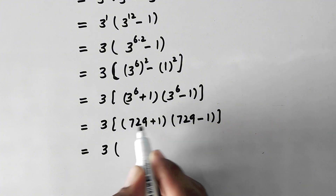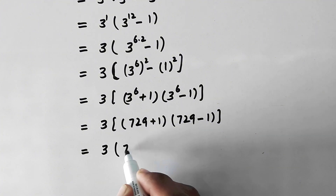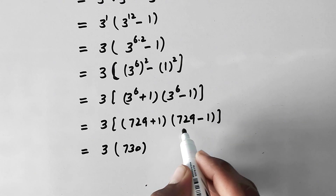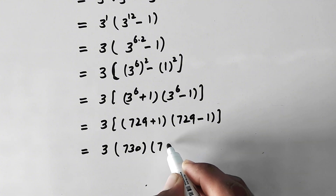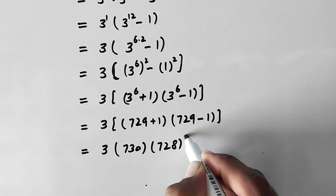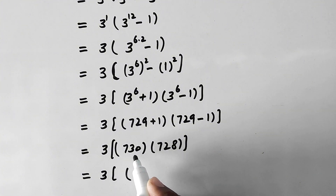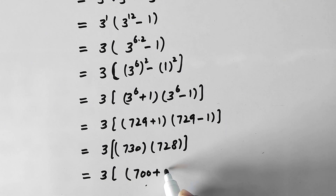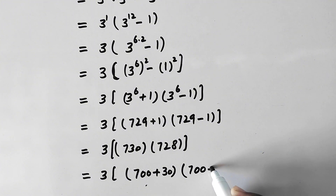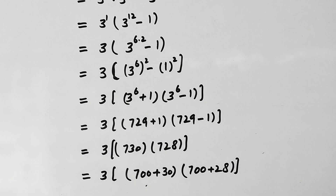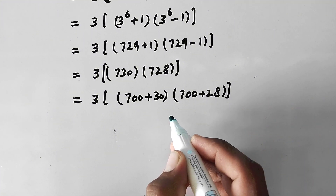So 729 minus 1 equals 728, and 729 plus 1 equals 730. We now have 3 times 730 times 728. To compute this, we expand 730 as 700 plus 30, and 728 as 700 plus 28.